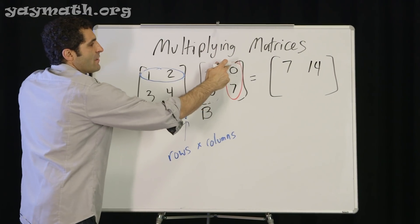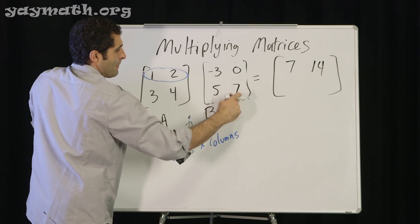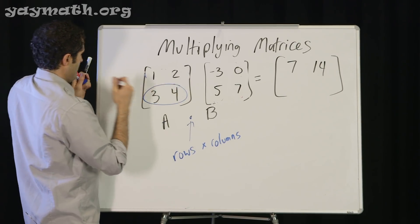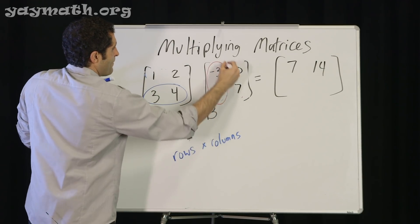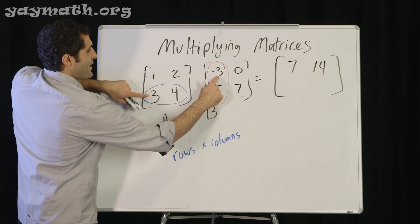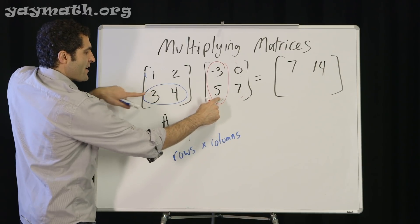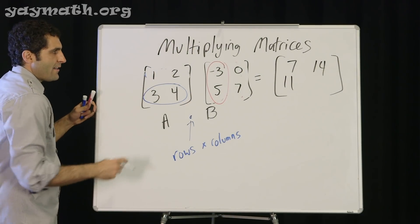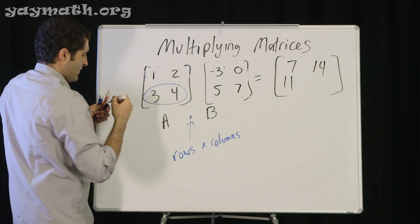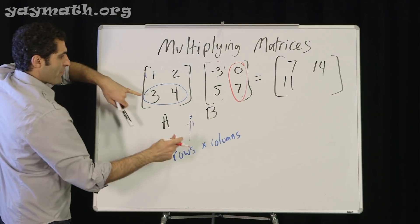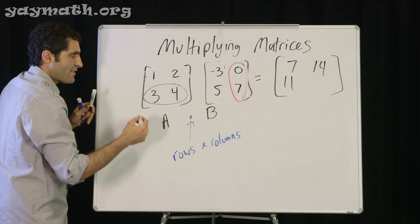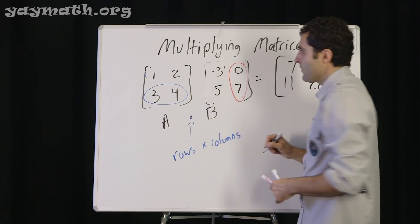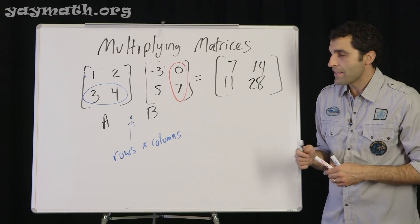We've exhausted every column, so we can go to the next row over here. And starting again, column 1. 3 times negative 3 is negative 9, plus 4 times 5 is 20. That's negative 9 plus 20 is 11. Then we move on to the next column. 3 times 0 plus 4 times 7 is 28. Rows times columns.